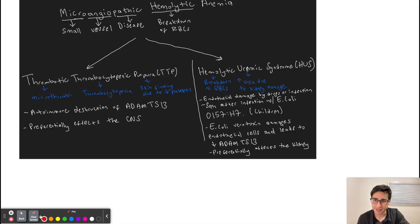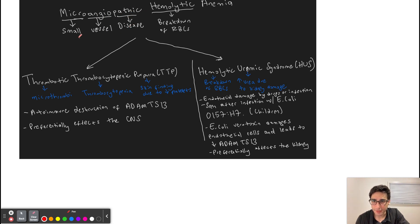Hello everyone. In this video we'll be discussing microangiopathic hemolytic anemia. It is important to understand what this disease is, and we can do this by looking at the name. Micro means small, angio means vessel, pathic means disease — so this is going to be a disease of the small blood vessels. Hemolytic means there's breakdown or destruction of red blood cells, and this results in anemia.